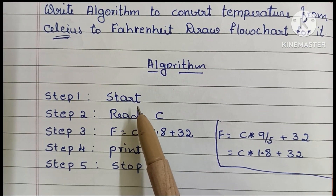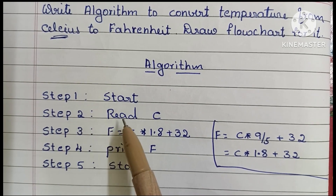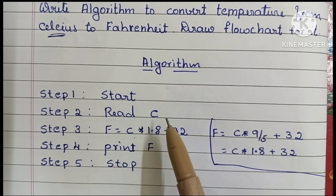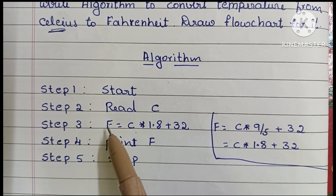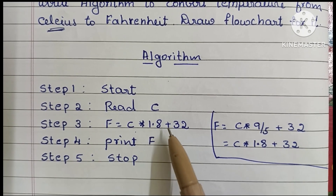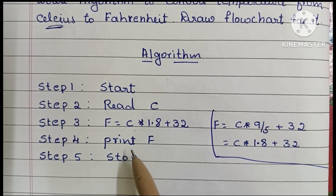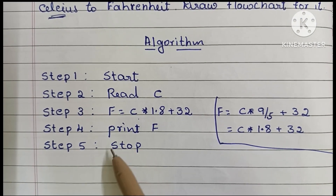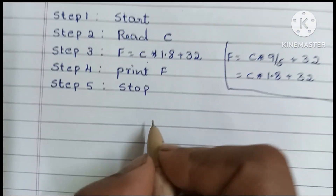To summarize the algorithm: Step 1 - Start. Step 2 - Read C (where C is the Celsius value). Step 3 - Calculate F = C × 1.8 + 32. Step 4 - Print F. Step 5 - Stop.